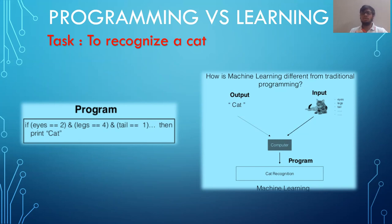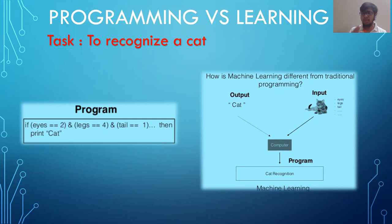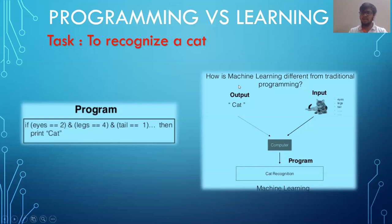So why machine learning? If you use the first approach — eyes are two, legs are four, tail is one — the machine would never be able to differentiate between a cat and a dog because both share those features. The machine has to by default extract the unique features between a cat and a dog. For that you use machine learning, just like teaching a kid, by giving an image and a label. That is how the traditional approach differs from a machine learning approach.